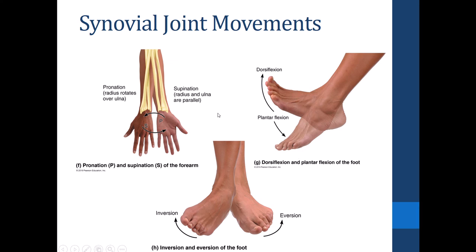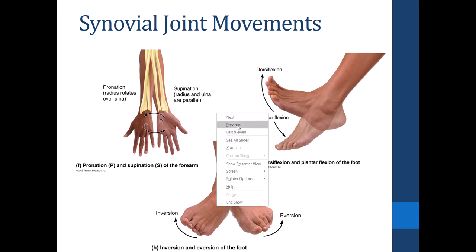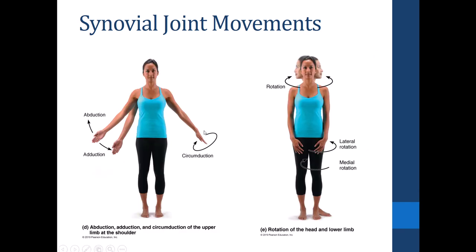To recap, rotation, abduction, adduction, flexion, and extension apply to many joints throughout the body, whereas the special movements just discussed are specific to particular regions.